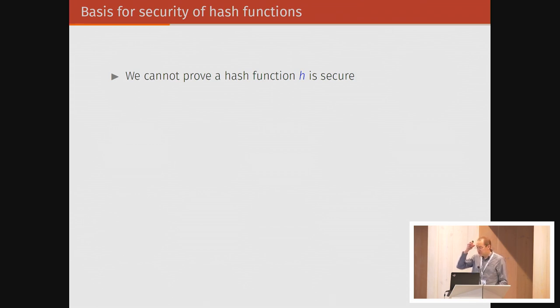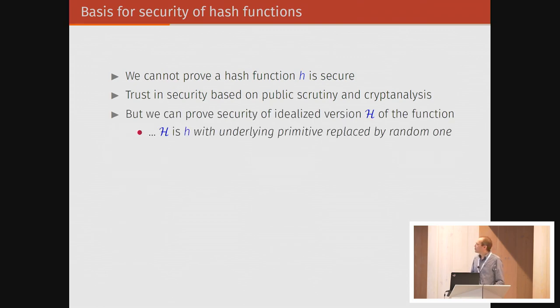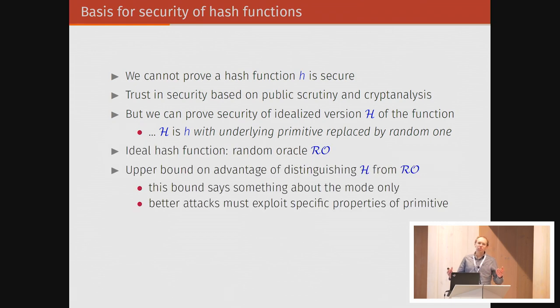So these are three different examples of what hash functions look like. Typically, a number of layers of constructions, and in the end you're reduced to something you can build, which is either a permutation or a block cipher. So what's the basis of security for hash functions? We're in a provable security session, but we should not forget that we cannot prove a hash function secure. We cannot prove a block cipher secure or a permutation or anything. We can only rely on public scrutiny and cryptanalysis. That's what we have to rely on. But we can do something close to proving this security. Namely, we can idealize this hash function by replacing the underlying primitive by something completely random, like a random permutation or something randomly drawn from the space of all primitives. And that we can prove.